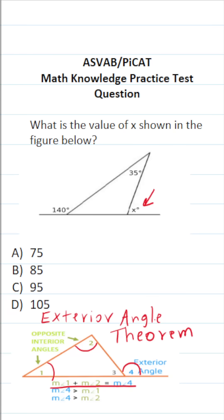If we look at the question that we have, the measure of this angle plus the measure of this angle is going to equal the measure of angle x. That said, we first have to determine what this unknown angle is here.